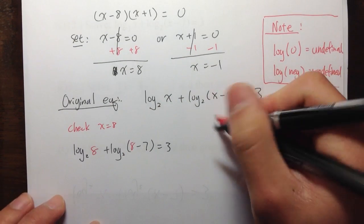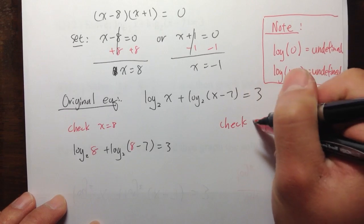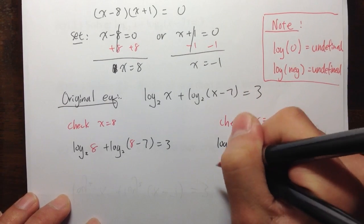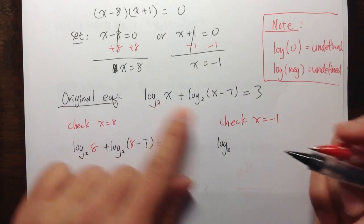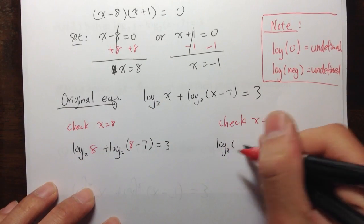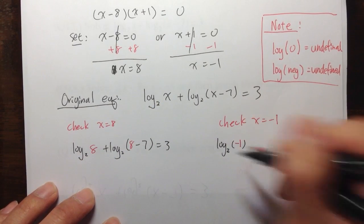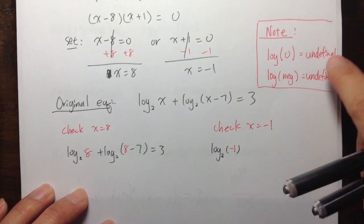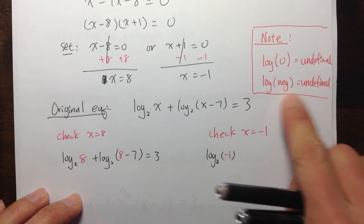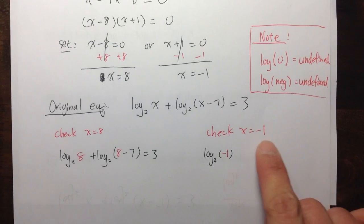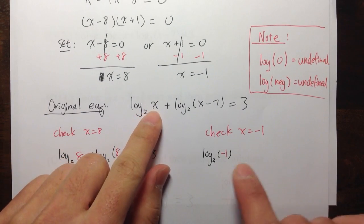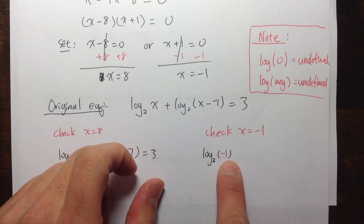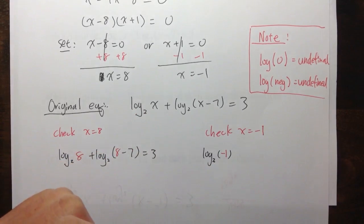And now, I will write down the check right here for the negative 1. Check x is equal to negative 1. If that will work. I will write down log base 2. The x is negative 1. So, I will put parentheses and the negative 1. You can actually just stop right here already. Because, as I said right here, log of any negative number, it's undefined. When you plug in negative 1 into this part of the equation, you get log base 2 of negative 1. That's undefined.